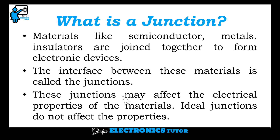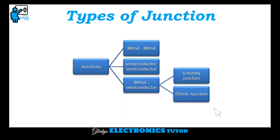These junctions may affect the electrical properties of the materials; ideal junctions do not affect the properties. The types of junctions are metal-metal junction, semiconductor-semiconductor junction, and metal-semiconductor junction. The metal-semiconductor junction is again divided into Schottky junction and ohmic junction.